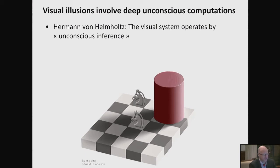What I like about this example is that anybody who would want to build a computational vision system would build it in this way. A computer would fall to the same exact illusion — it's a rational illusion. Illusions tend to be rational; they are unconscious inference. Another aspect of this illusion is that it must imply there are lots of computations before we become conscious of anything. We are conscious of the results. We are not conscious of the complex computations of detecting the shadow, or even the shadow itself.